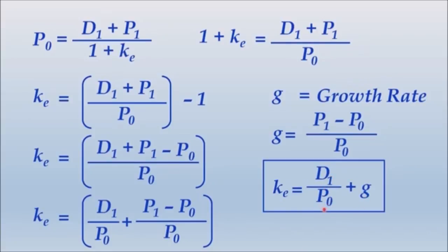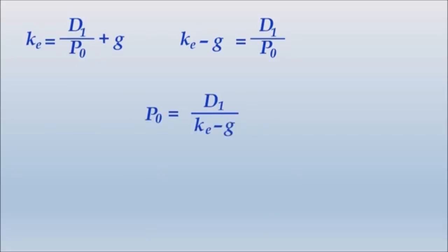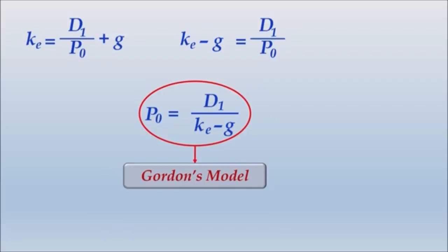Moving further, taking G from the right-hand side to the left gives KE − G = D1/P0. Cross-multiplying, P0 comes to the left and (KE − G) becomes the denominator on the right, giving: P0 = D1 / (KE − G). This is what we have always learned as Gordon's Model for determining the value of a share. To find P0, divide the expected dividend by the difference between the expected rate of return and the growth rate.